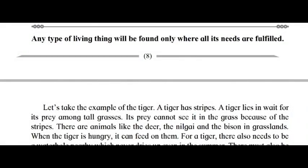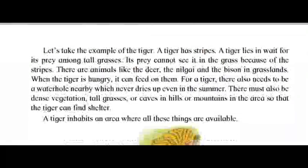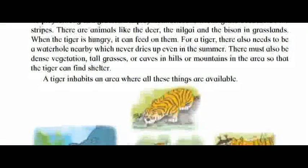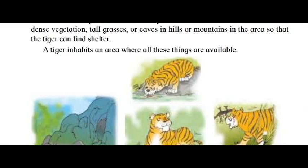Any type of living thing will be found only where all its needs are fulfilled. Take the example of the tiger. A tiger has stripes and lies in wait for its prey among tall grasses. Its prey cannot see it because of the stripes. There are animals like the deer, the neilgai and the bison in grasslands. When the tiger is hungry, it can feed on them. There also needs to be a water hole nearby that never dries up, and dense vegetation, tall grasses, or caves in hills so the tiger can find shelter. A tiger inhabits an area where all these things are available.